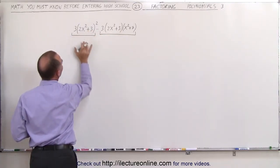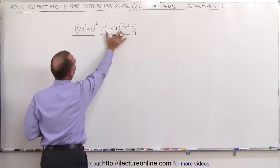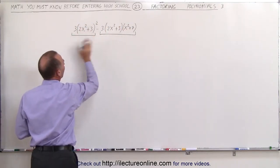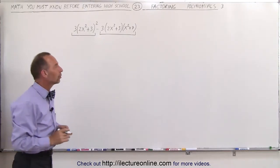Notice that 3 is multiplied times this, the 3 is multiplied times this, and times this. So this belongs as one term, this belongs as one term, and we need to see what's common between those two terms.